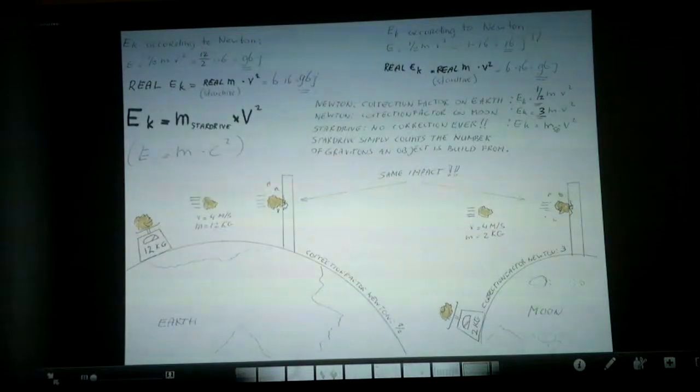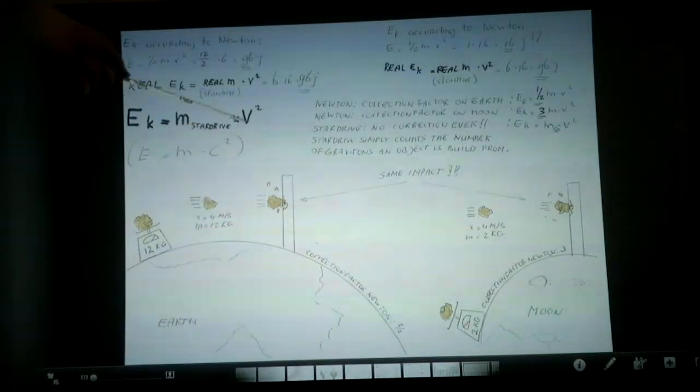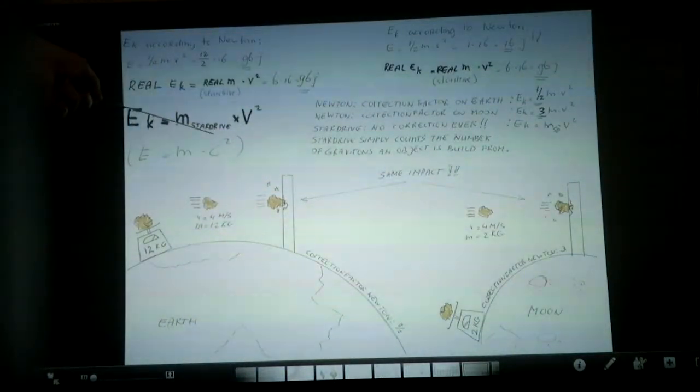It's about his famous formula about kinetic energy. Newton says kinetic energy is half the mass times V squared. The thing is, the actual mass is not the thing Newton weighs on a scale. Remember the Zeppelin? Exactly. Your actual mass is about half what you measure on a scale. So your real formula should be E kinetic is mass star drive times V squared, and mass star drive is about half Newton's mass on Earth.